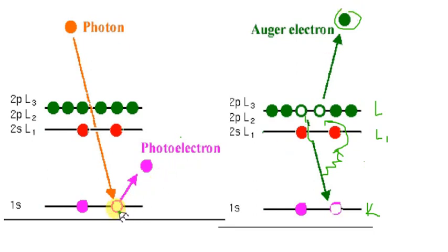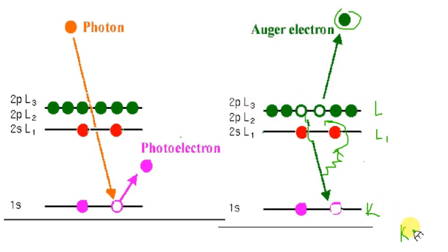This transition can be written in the form of symbols. If the first electron was ejected from the K shell, we write K first. The second electron fell from level L3, so we write L3. And the Auger electron was also ejected from L3, so we write L3 again. In this way the transition is written as K-L3-L3.